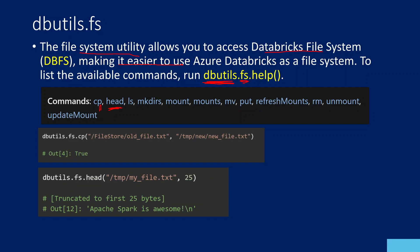These are all the commands available: CP for copying data, HEAD for reading content from a file, LS to list down the contents of a folder — if you supply a folder, it gives the list of folders and files inside it. MKDIRS means make directory, which helps you create a directory. Mount commands we will discuss in an upcoming video. MV will help you move a file in the Databricks file system. PUT will help you add content to a file. RM will help you remove a file. Unmount and update mount commands will also be discussed in upcoming videos.